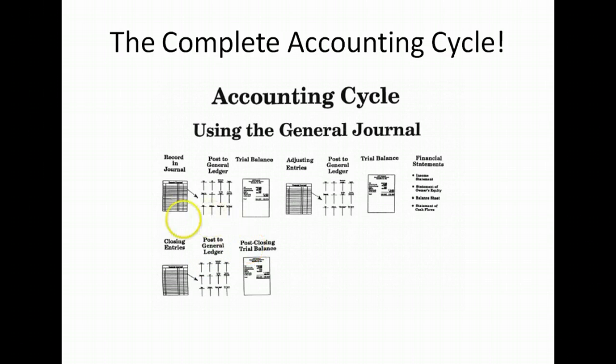You can see there's three steps that we do three times. Journalize post, trial balance. Journalize post, trial balance. Journalize post, trial balance. The purpose of trial balance is to prove the equality of debits and credits, and so if you've made a mistake, you catch it and you know what part of the journal you need to find your error in.